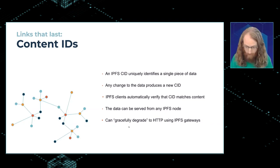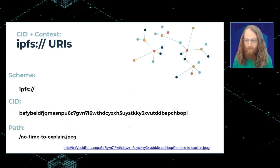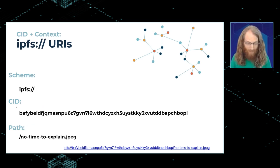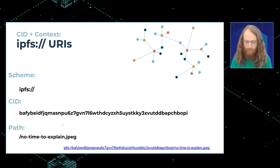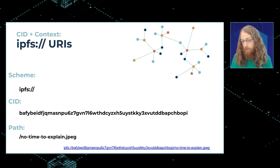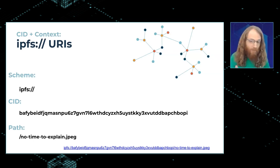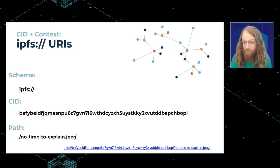The solution is to just use the IPFS URI scheme. NFT metadata standards like ERC-721 want you to return a URI, and we've got one. It's really simple to construct: you take the IPFS CID and stick 'ipfs://' in front of it, and you've got an IPFS URI. You can also optionally have a path component if you store your data in IPFS inside a directory — the CID points to the directory object, and you can add the file name as a nice human-readable path. If you're really trying to save every byte on-chain, you might only use the CID without the file name.